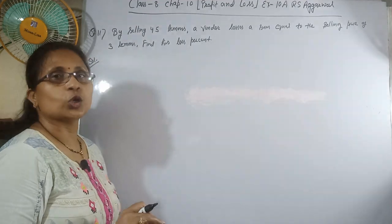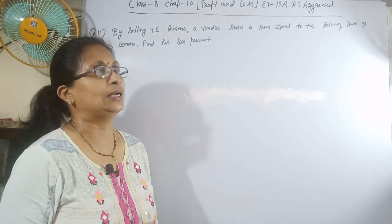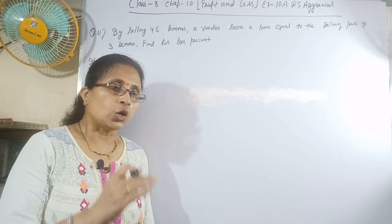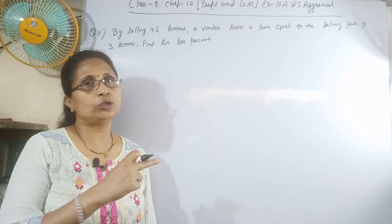We need to find the loss percent. The loss percent formula is loss divided by CP, multiplied by 100. This is what we have to find.